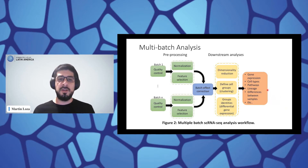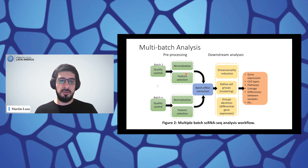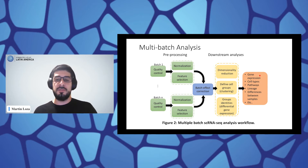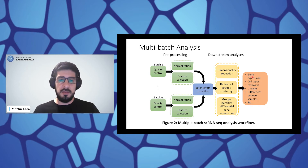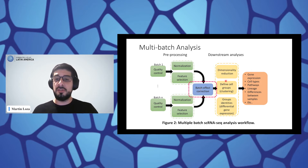In the case where we have more than one dataset, or batch, we can implement a general view of multi-batch analysis. Basically, we perform independent pre-processing of the batches, then merge them in a step named batch effect correction, and then perform joint downstream analysis with different objectives — comparing gene expression, cell types, or pathways. I would like to highlight the batch effect correction as a really important step, because any change during the correction will directly affect the downstream analysis and change the main conclusions or results we can obtain.